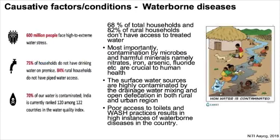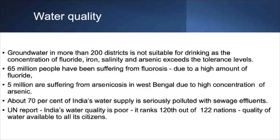Looking at the causative factors for water contamination, 68% of total households and 82% of rural households do not have access to treated water. Contamination by microbes and harmful minerals — namely nitrates, iron, arsenic and fluoride — are crucial to human health. Surface water sources are highly contaminated by drainage water mixing and open defecation in both rural and urban regions. For groundwater, in more than 200 districts it is not suitable for drinking as the concentration of fluoride, iron, salinity and arsenic exceeds the tolerance level. About 65 million people are suffering from fluorosis due to high fluoride in drinking water, and 5 million are suffering from arsenicosis in West Bengal due to high concentration of arsenic.